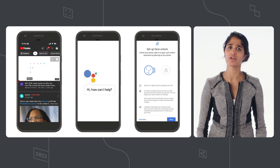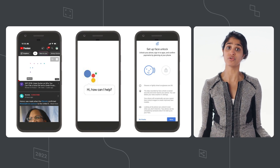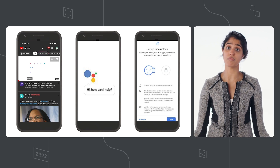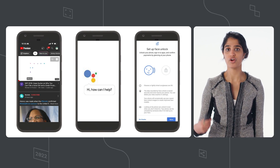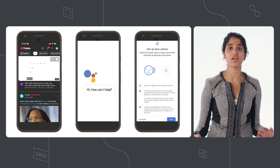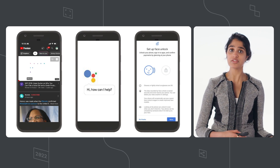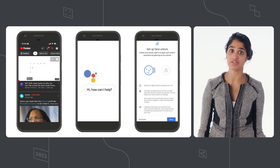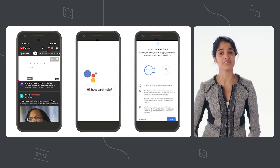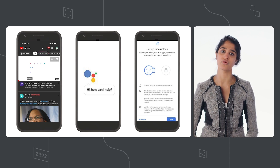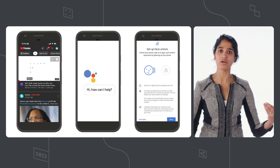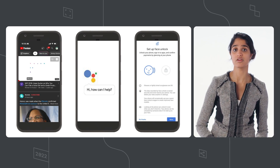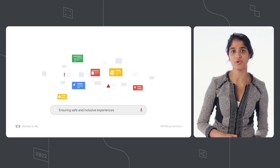It's critical that when we build and design models, especially models that are going to translate into the way that users experience our products, we do so in a way such that they work for every user — whether it's ensuring diverse creator voices succeed on YouTube, any accent can get appropriate help from the assistant, or any face can successfully and safely unlock their phone. Let's talk about an example on search.